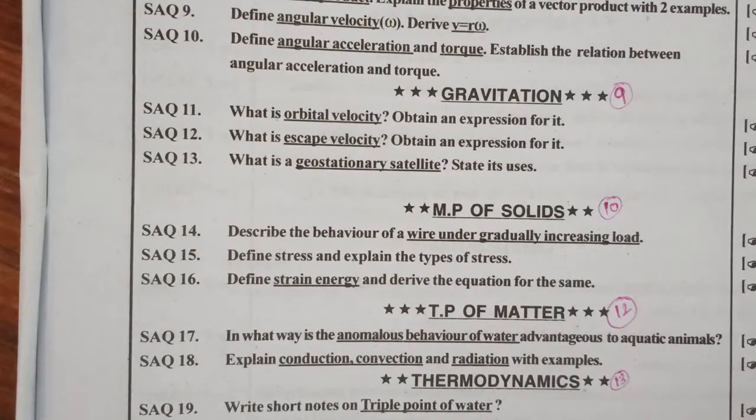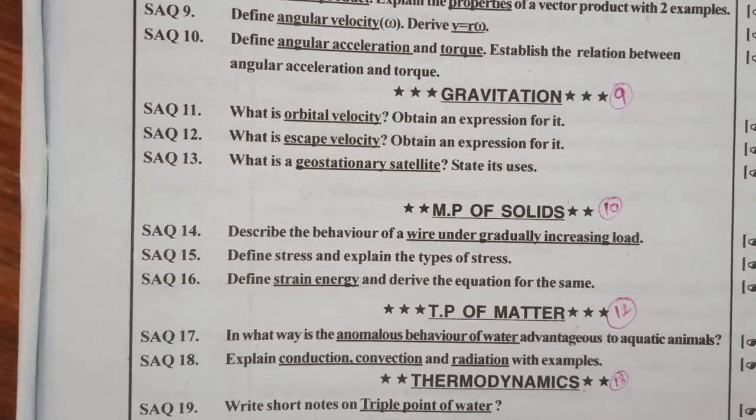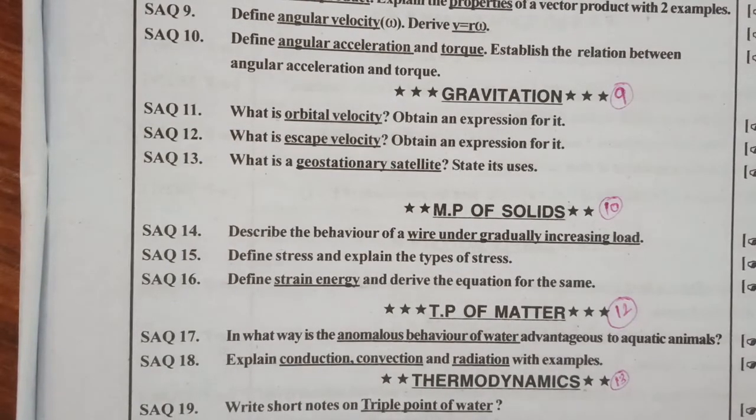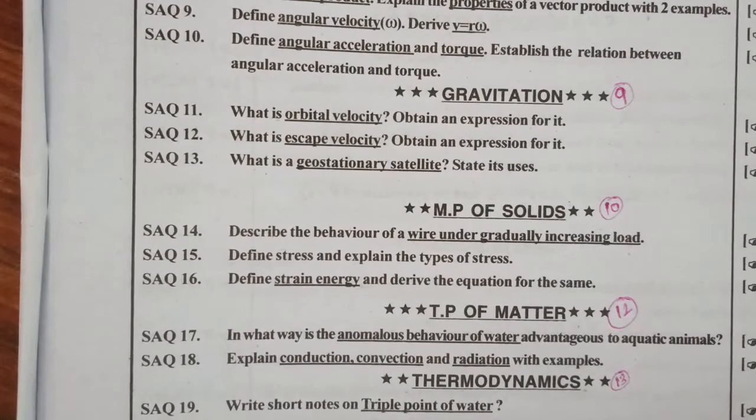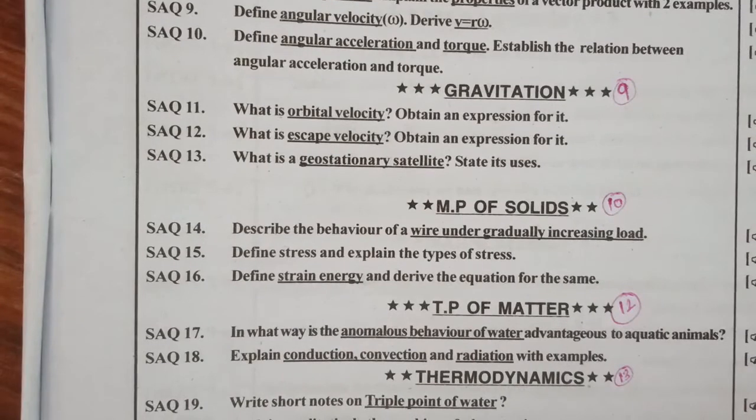Explain qualitatively the working of the heat engine. This is also very important. Next: adiabatic process and isothermal process, equation for ideal gas equation during isothermal process, during adiabatic process is very important. And write short notes on cyclic process. This is also important.